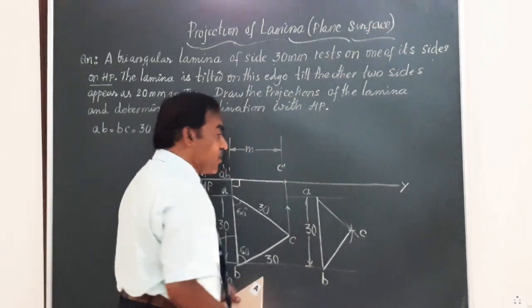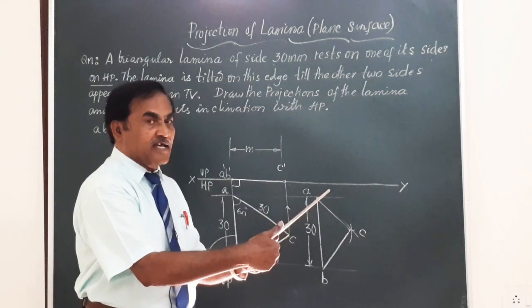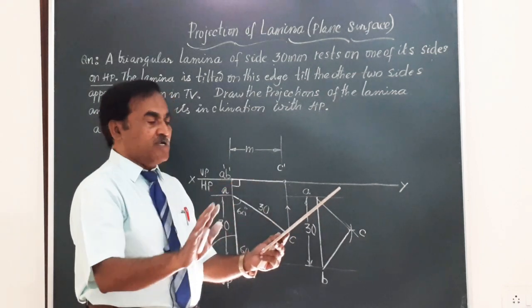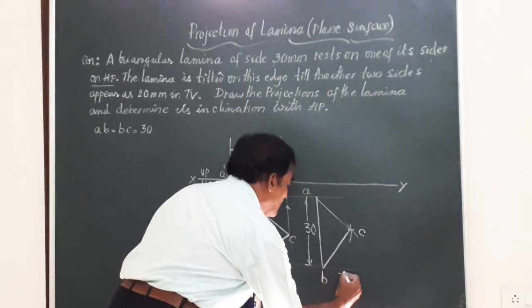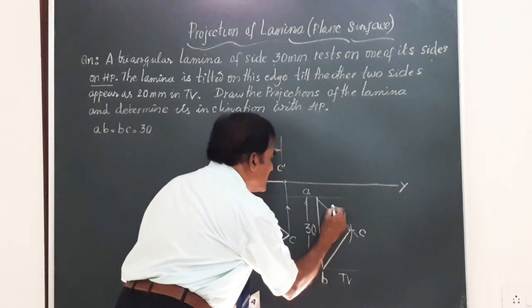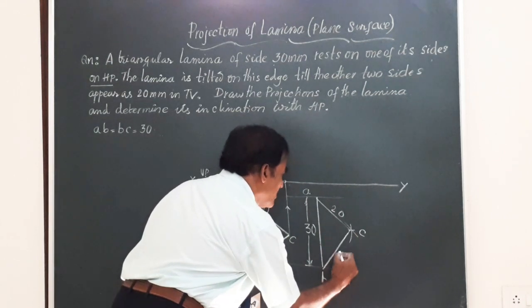Friends, this is the top view. How this lamina appears when it is making an angle theta, which you are going to measure soon. So, friends, we have given the top view. This is AC measuring 20 mm and BC measuring 20 mm.